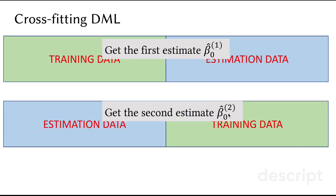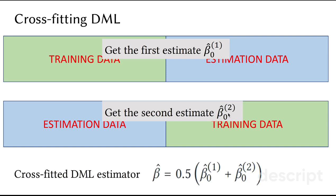And guess what we are doing next? We just estimate the cross-fitted estimator by taking the average between the two.